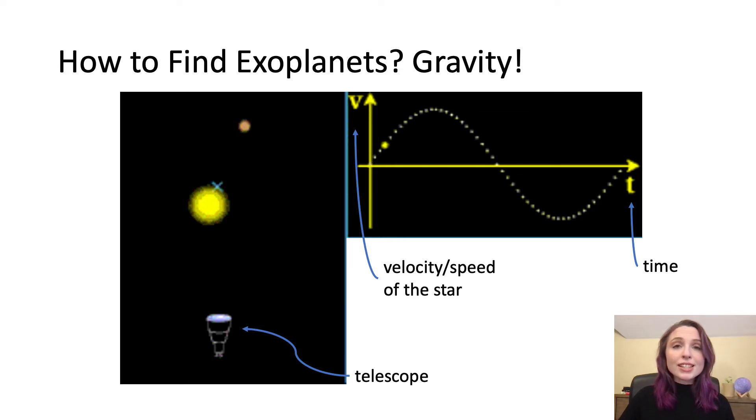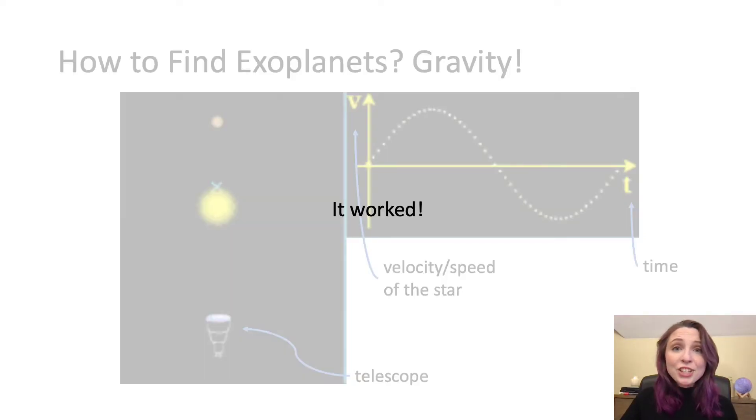The first section of the graph shows us that the star was moving away from us as the planet orbited halfway around its star. Then we can see the star turned around and moved back toward us as the planet finished its orbit. Astronomers thought that if they could see this pattern in the movement of a star, they could tell that there was a planet orbiting around it.